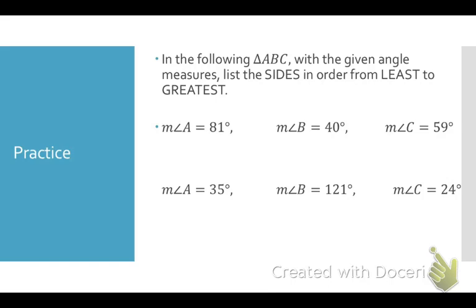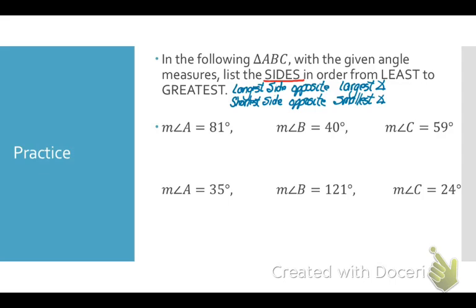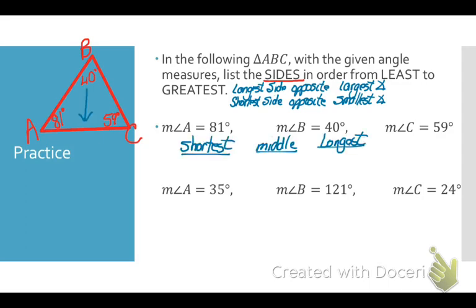In triangle ABC with given angle measures, list the sides in order from least to greatest. They are asking for sides but only giving angle information. Remember: the longest side is always opposite the largest angle and the shortest side is always opposite the smallest angle. I'll draw a triangle labeled ABC and make a table: shortest, middle, longest.